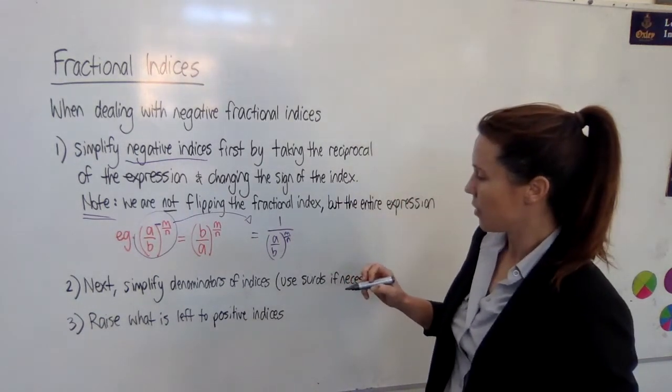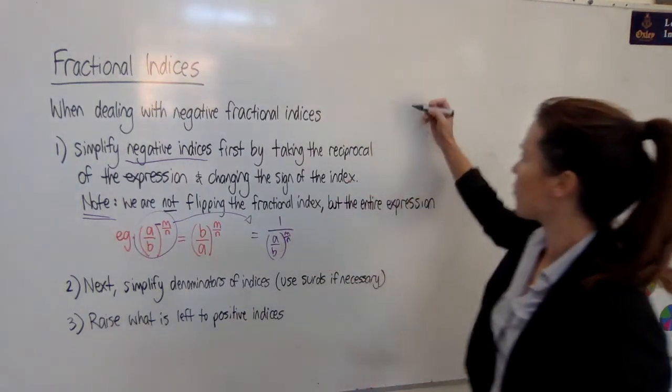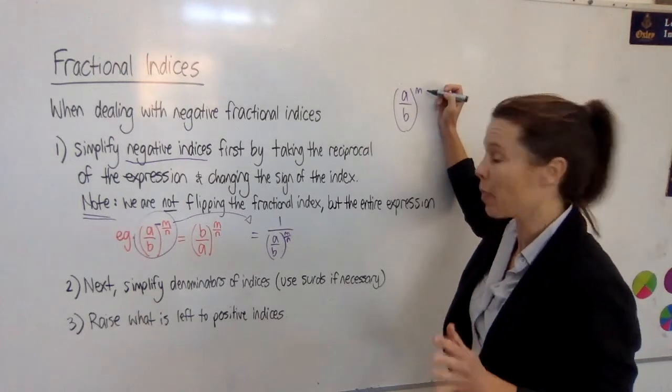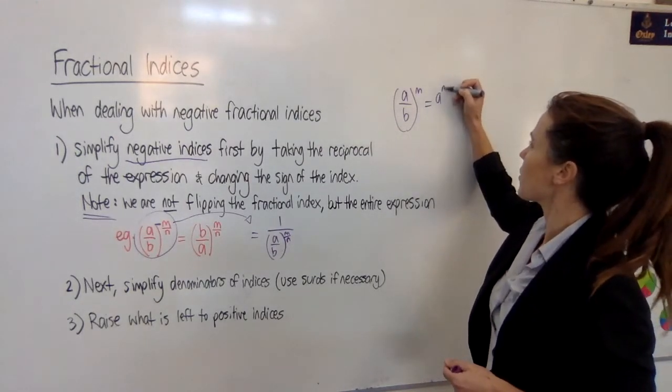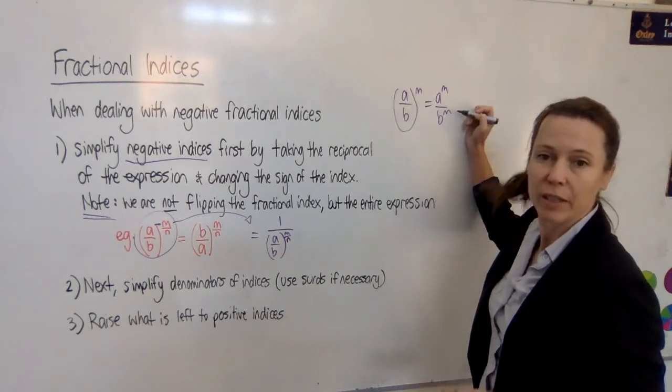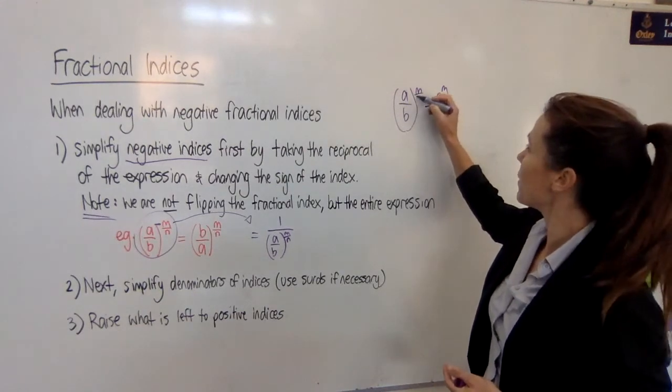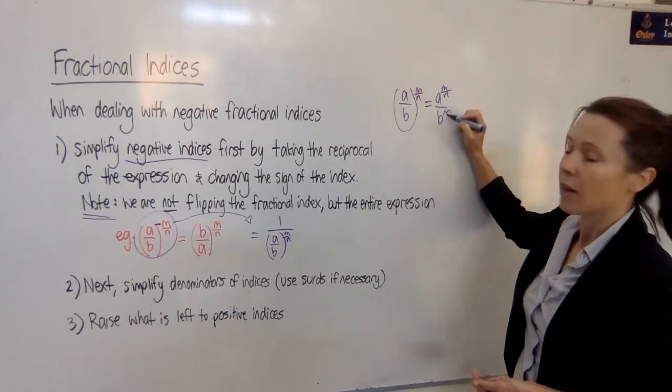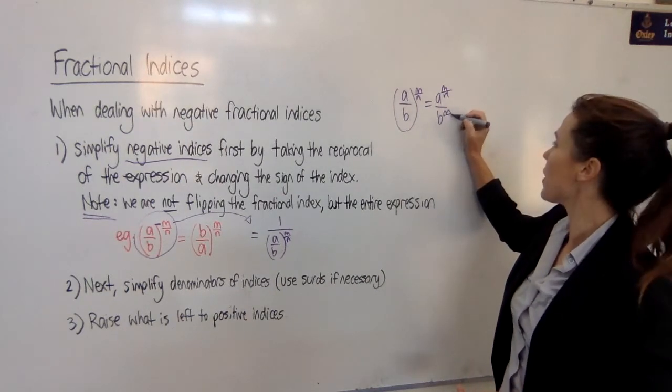Now we know that if we're raising a fraction, let's say just a over b to the power of let's just say m over n, we're raising the top and raising the bottom separately, don't we. So if we've got a complicated thing like m over n, it's exactly the same as a to the power of m over n over b to the power of m over n.